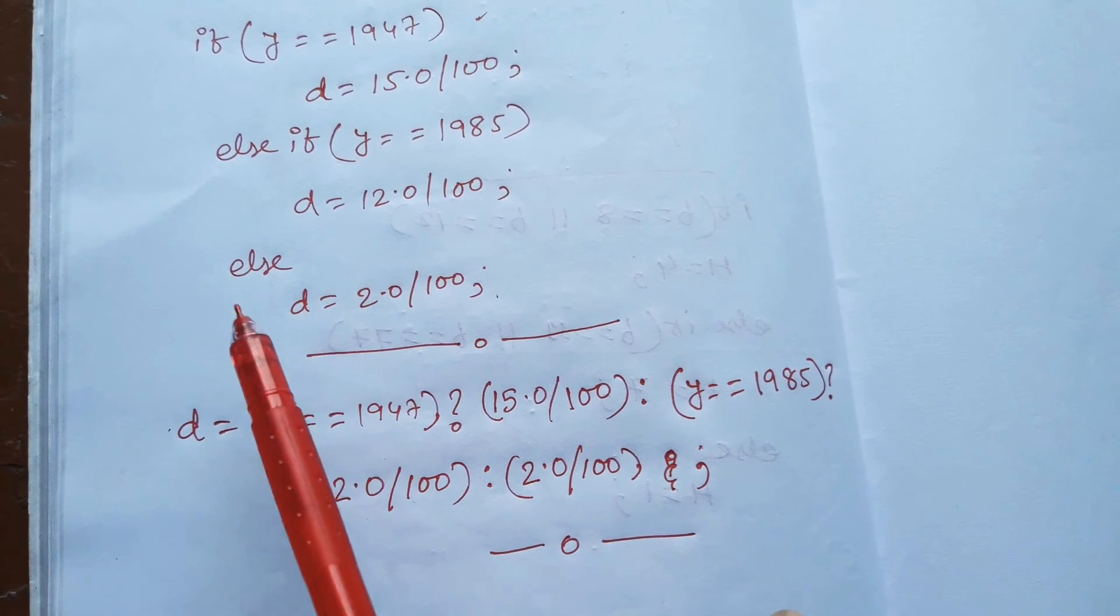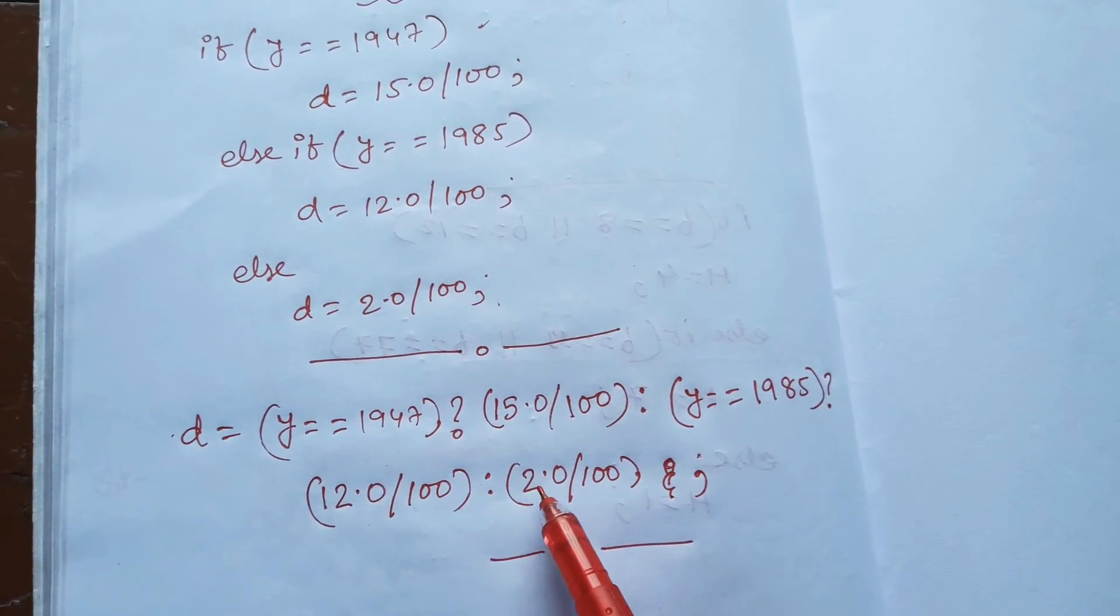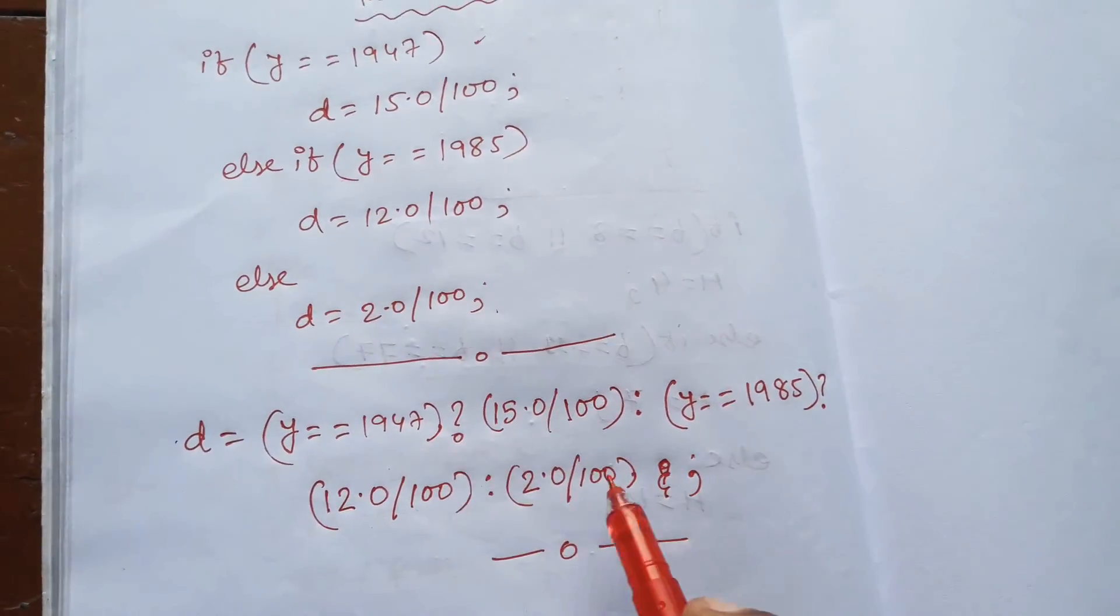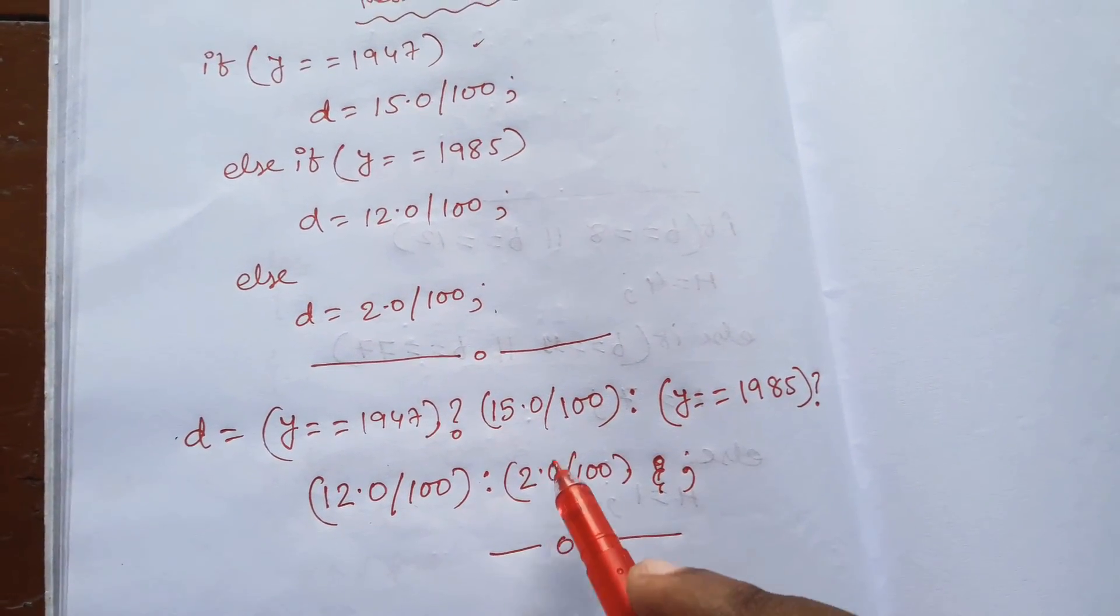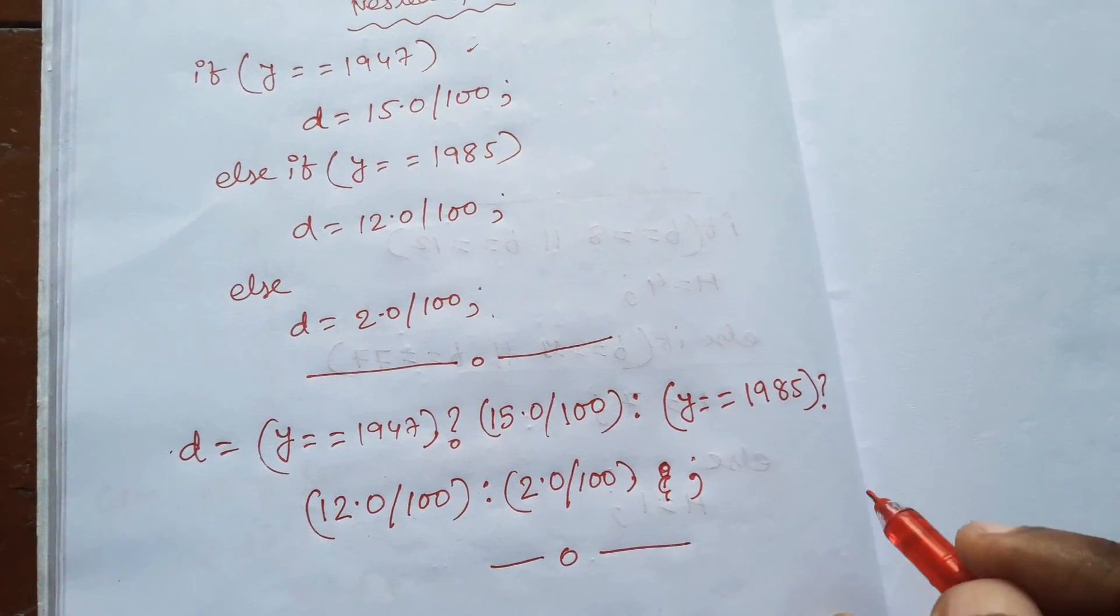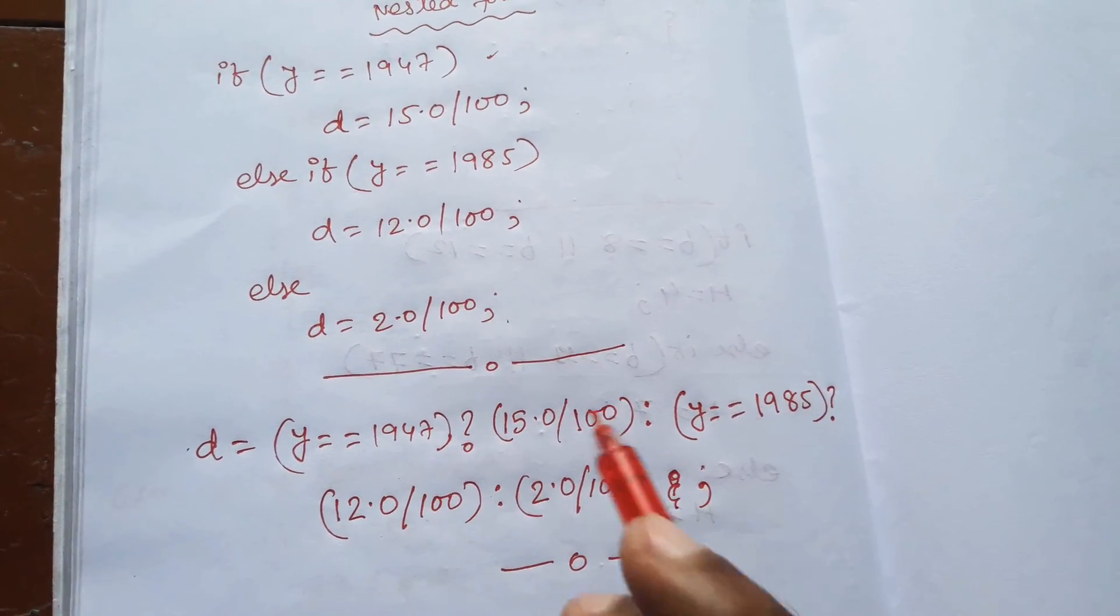If we had extra else-if conditions, we would write that condition here. Suppose y equals equals to 1995, then we write y equals equals to 1995, then question mark, then the true condition, colon, false condition. That is our answer.